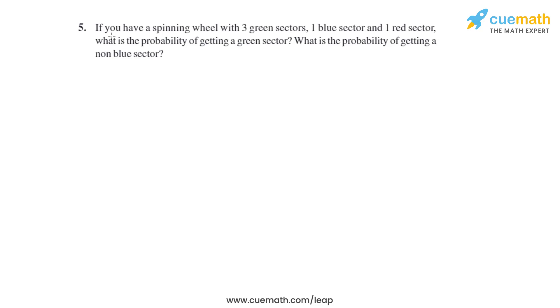Question 5 of this exercise says if you have a spinning wheel with three green sectors, one blue sector, and one red sector, what is the probability of getting a green sector? What is the probability of getting a non-blue sector?